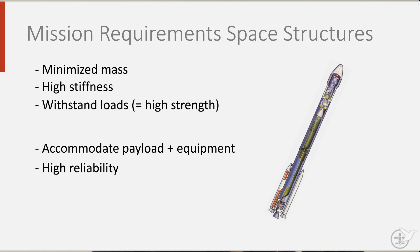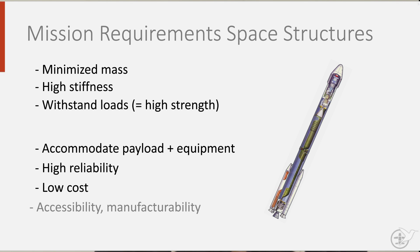An Ariane 5 rocket that fails costs an estimated 220 million US dollars. As spacecraft development and the associated research is often a government-funded business, there is also a drive for low cost, even though space requires more complex and expensive structural and material solutions than in aeronautics. Manufacturability and accessibility of the structure are also important.